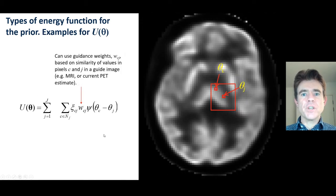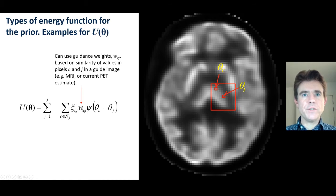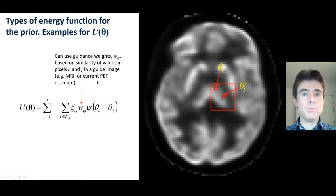We can take this even further by introducing guidance weights w. We could have, for example, an MR image or even the current PET image estimate, from which we can estimate what these guidance weights should be.